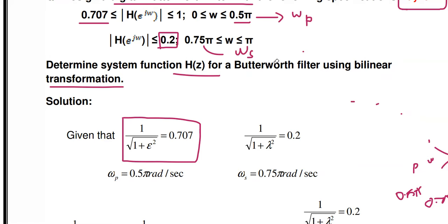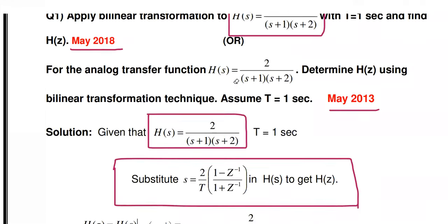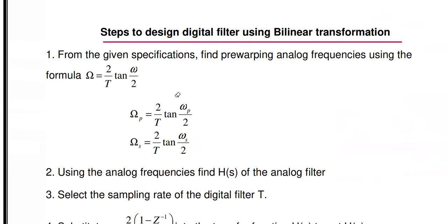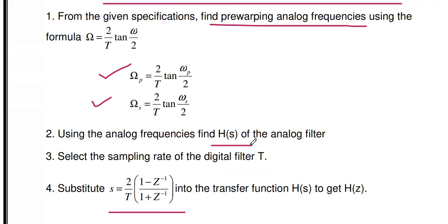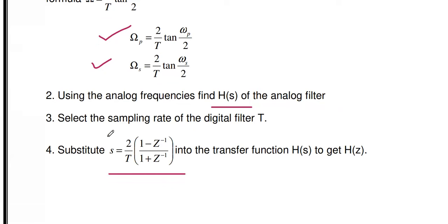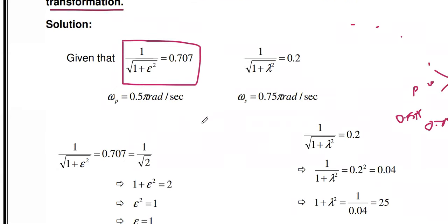In bilinear transformation, what is the procedure? The first step is to find the analog pre-warping frequency. From the digital frequency we find the analog pass band and stop band frequencies using the pre-warping formula. Then using the given specification we find H(s). Then in the H(s) equation we replace s with the bilinear substitution to get H(z). These are the steps to design a digital IIR filter.